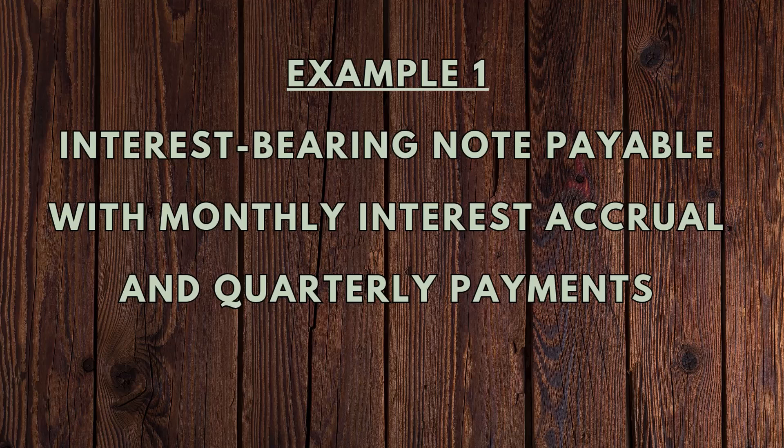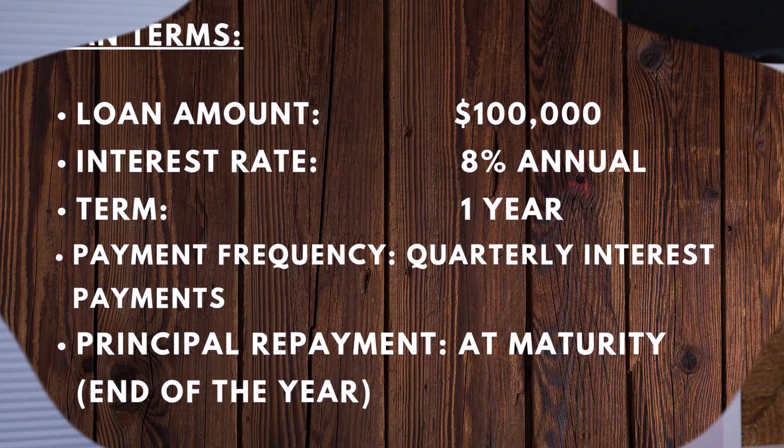Let's look at an example of an interest-bearing note payable with monthly interest accrual and quarterly payments. Let's assume your company has taken out a $100,000 loan with an 8% annual interest rate for one year. For simplicity, let's assume it is January 1st and the principal of the loan is due on December 31st. Interest payments are made quarterly, and although the interest payments are made quarterly, the company will accrue interest monthly in its books during the monthly close process. This is an example of an adjusting journal entry.